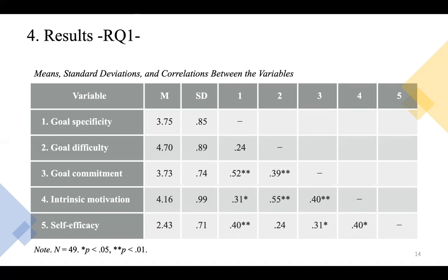This table shows the means, standard deviations, and correlations between the variables. The mean scores of goal difficulty and intrinsic motivation are relatively high. On the other hand, the score of self-efficacy was the lowest. In terms of correlations, goal specificity had a moderate correlation with goal commitment, and goal difficulty had a moderate correlation with intrinsic motivation. On the other hand, goal specificity had weak correlations with goal difficulty, and goal difficulty had a weak correlation with self-efficacy.